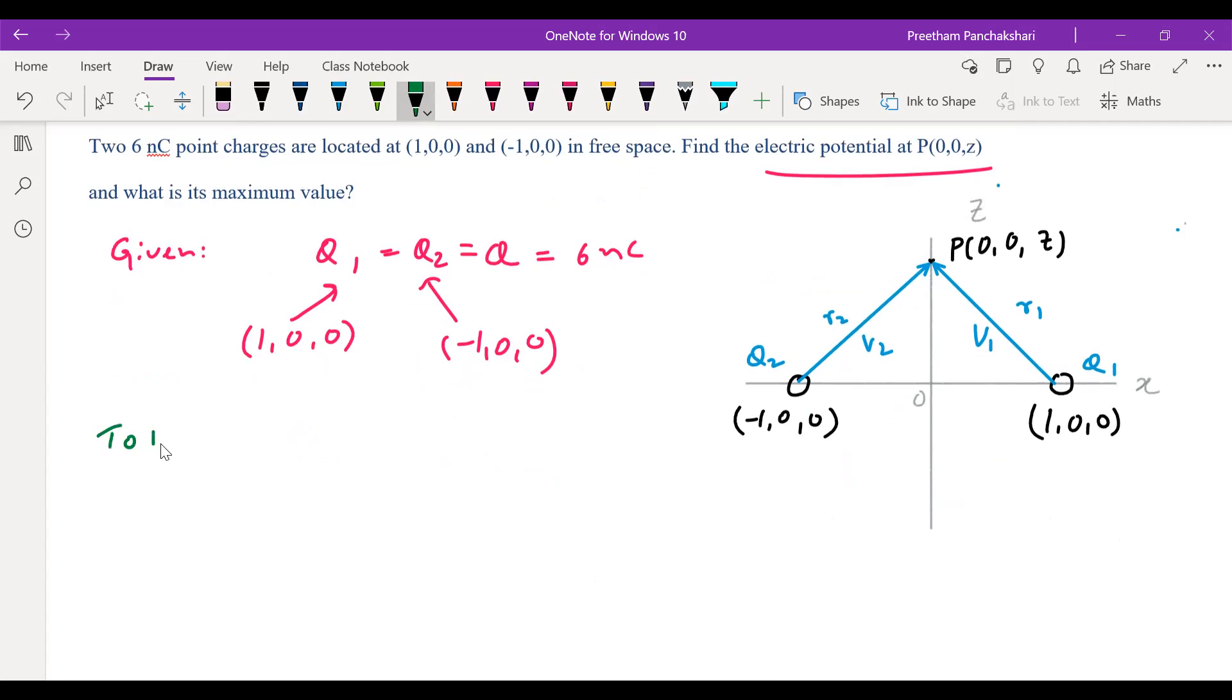Total potential is V equal to V1 plus V2. The charges are point charges. The potentials are given by Q/(4πε₀R₁) plus Q/(4πε₀R₂). So we need to calculate R1 and R2. This distance is 1 meter, so you can use Pythagoras and find R1.